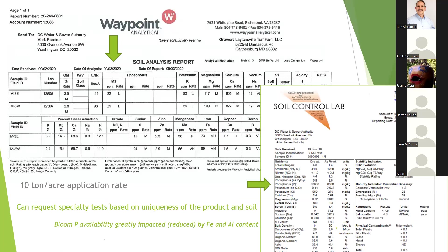It is also important to know that there are a lot of different specialty tests you can request when you do a soil analysis, and you'd request them based on your specific application — what you're doing with the soil or the media and what you're adding into it. Here's an interesting example: DC's Bloom product has a substantial amount of phosphorus in it, but almost all of it — like 98-99% of it — is in very, very slow release form.